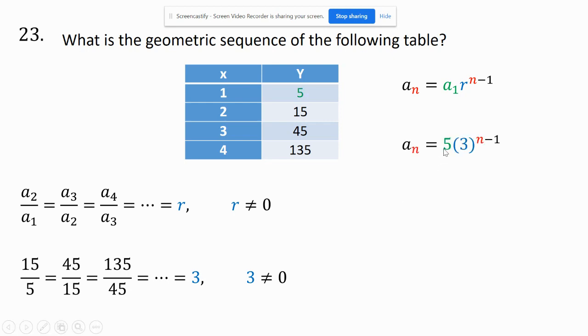it would be my first term, which is 5, times my rate, which is 3, to the n minus 1 power. That would be the geometric sequence for this table.